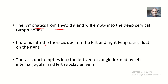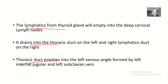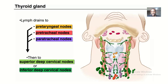From the deep cervical lymph nodes, the lymph will continue to drain into the thoracic duct on the left side, and into the right lymphatic duct on the right side. The thoracic duct will then empty into the left venous angle, which is formed by the left internal jugular vein and the left subclavian vein.